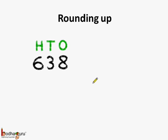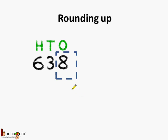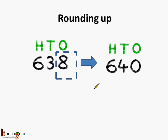Let's first revise what is rounding up, which we did in previous classes. Here we have a number 638. How do we round it up? Look at the 1's place — it has a digit 8. When the digit at 1's place is 5 or greater than 5, we increase the 10's place by 1 and make the 1's place 0. So 8 is rounded up and this number becomes 640. We rounded the number to the nearest 10.